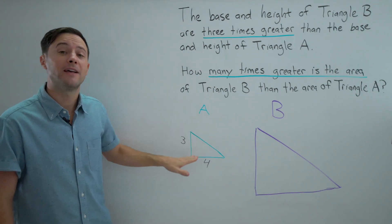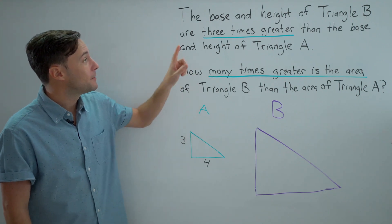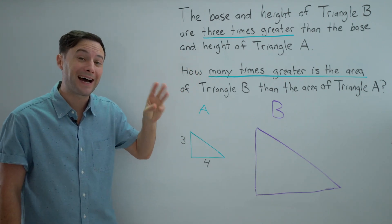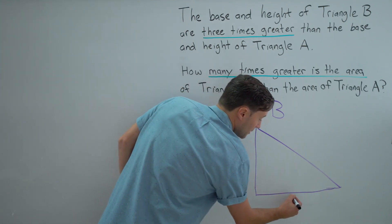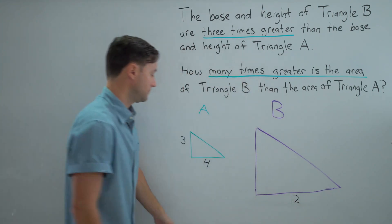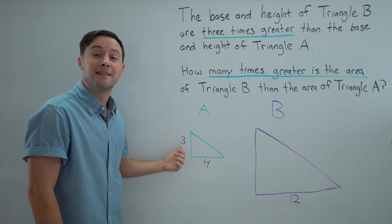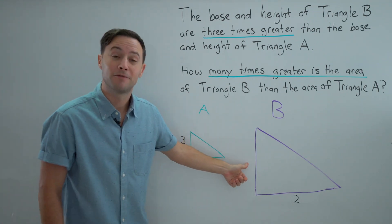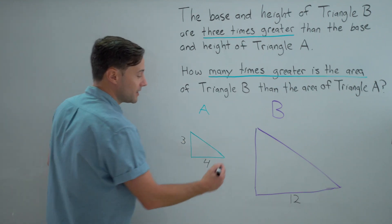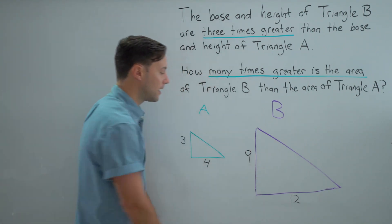If the base of triangle A is four, and the base of triangle B is three times greater than that, naturally, that would mean the base of triangle B is 12, four times three. If the height of triangle A is three, the height of triangle B has to be three times greater. So three times three gives us nine.